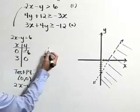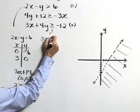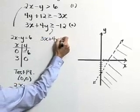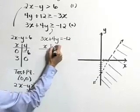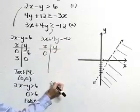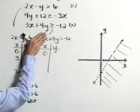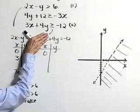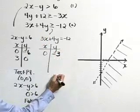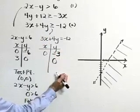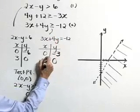Now let's look at the second inequality and graph its boundary line: 3x plus 4y equals negative 12. Using a t-table and letting x and y equal 0: if x equals 0, then 4y is negative 12, or y equals negative 3. If y equals 0, then 3x is negative 12, or x equals negative 4.